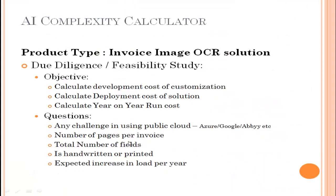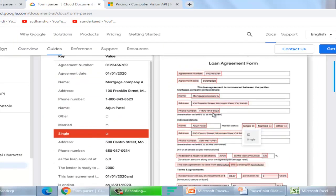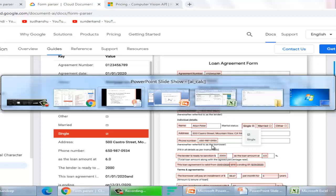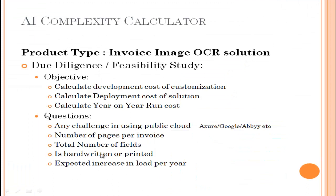How many fields are there — I think there are 20 to 30 fields in the sample form. For a chatbot you might ask how many queries a user will send and what kind of questions they can ask. For the invoice solution, are the documents handwritten or printed? Handwritten documents are generally difficult to parse and accuracy is low. You should ask this question. Also, is there any year-on-year increase in load? I will not cover that last point in the simple calculator I'm going to show today.